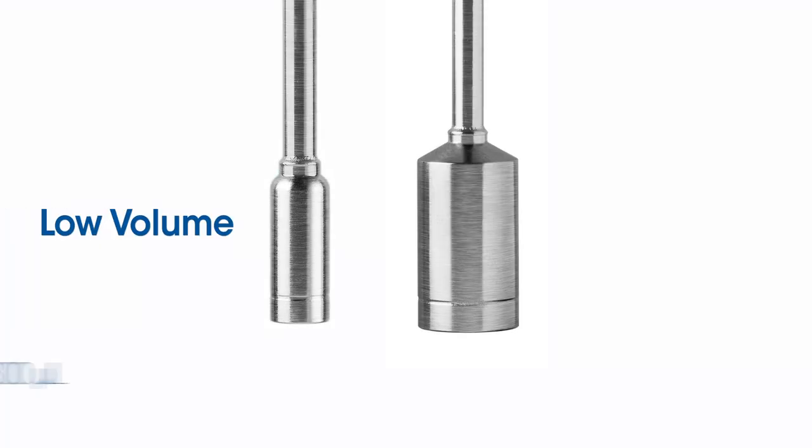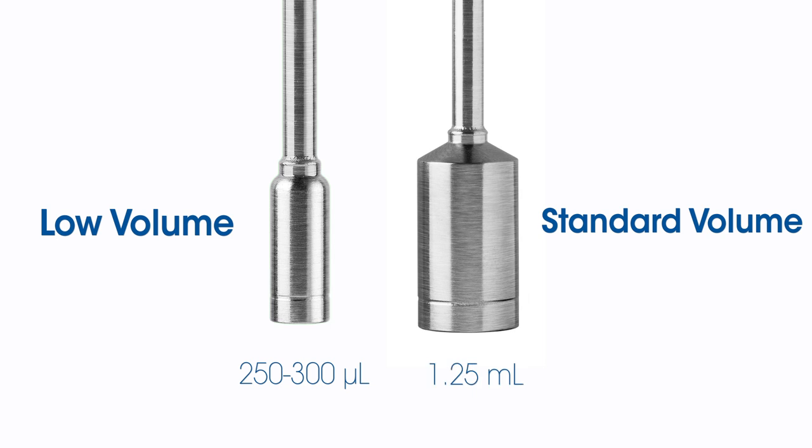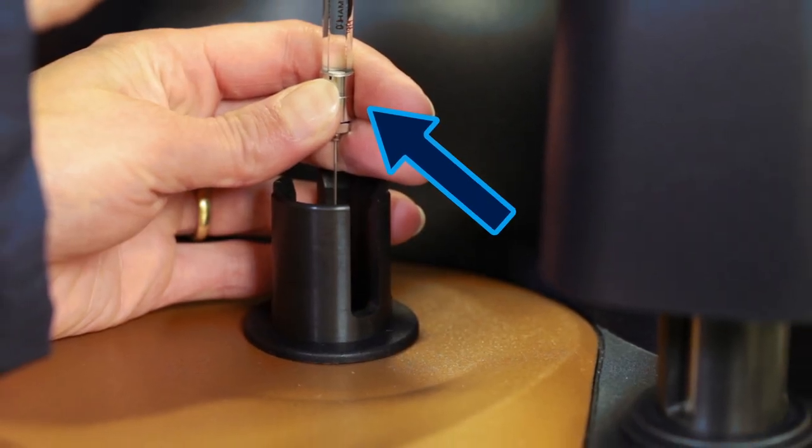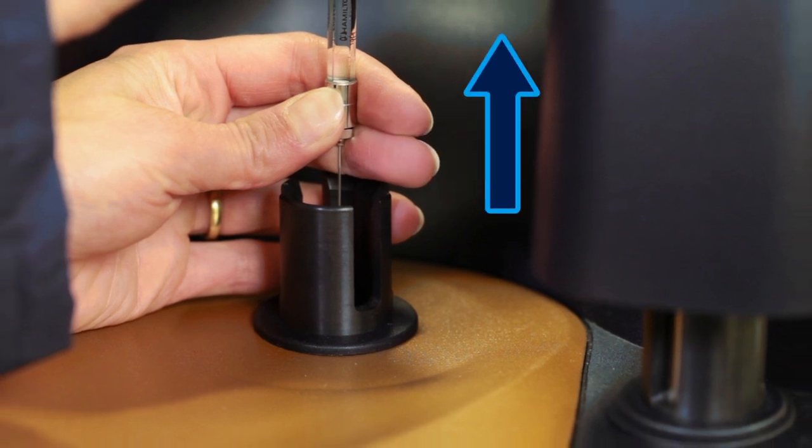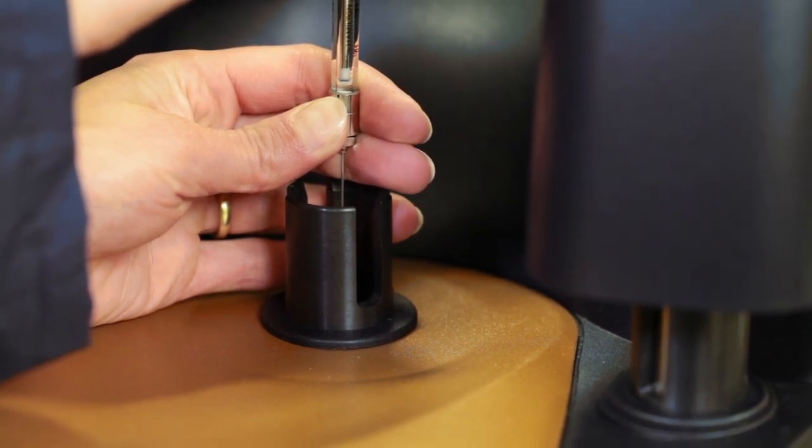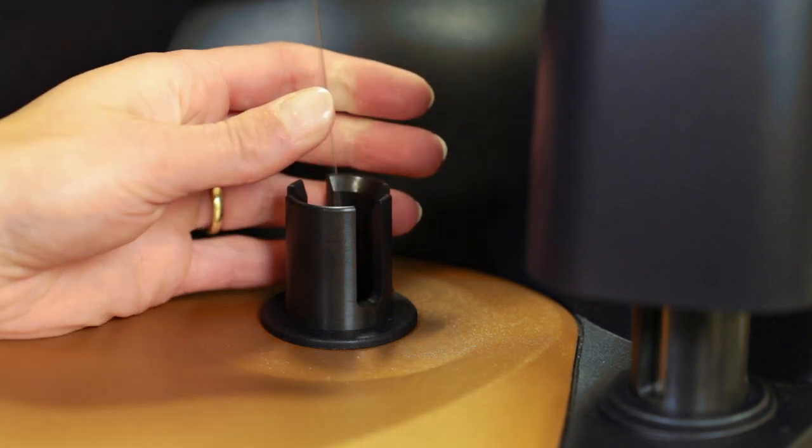The low volume option loads 250 to 300 microliters in the cell, and the standard volume is 1.25 milliliters. When loading, avoid air bubbles by touching the bottom of the cell with the blunt end needle and pulling up slightly. The solution is injected with a single downward motion of the plunger as the filling syringe is removed.